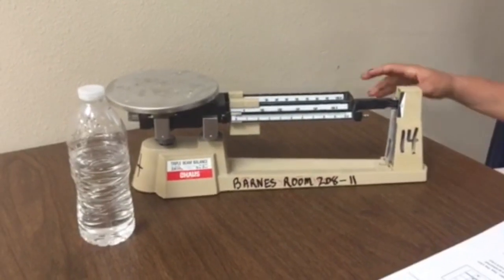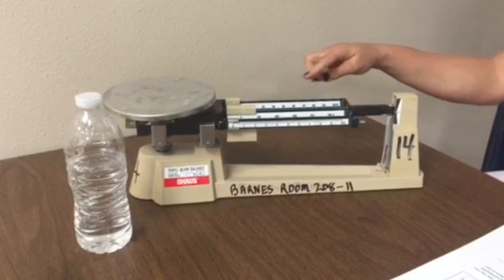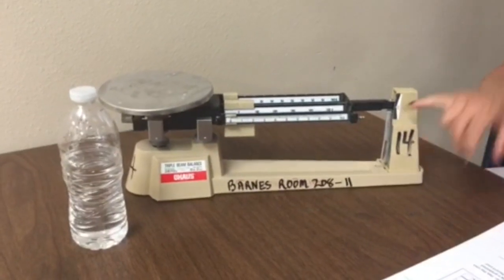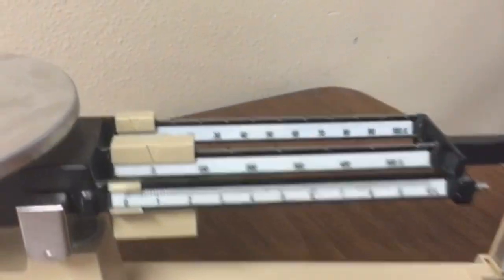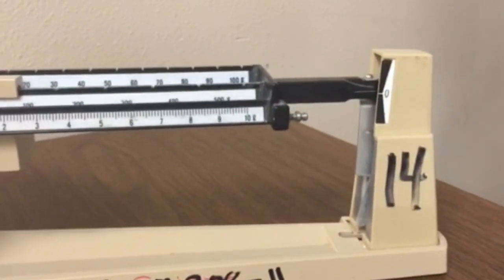Today we're going to be measuring mass using a triple beam balance. When you measure mass, you always make sure that your triple beam balance is starting at zero. Make sure your measurements are at zero and your line here is balanced.